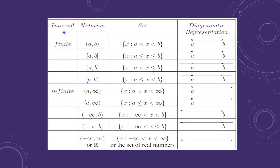Now we see interval notation, set format, and diagrammatic representation. If the endpoints are known, the interval is finite; if an endpoint is unknown, we use infinity, making it an infinite interval. The open interval (a, b) uses open parentheses. In set notation it is written as {x : a < x < b}. Points a and b are not included, so they are shown as empty circles in the diagram.